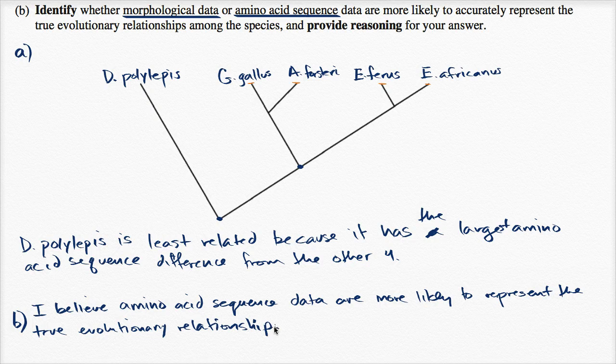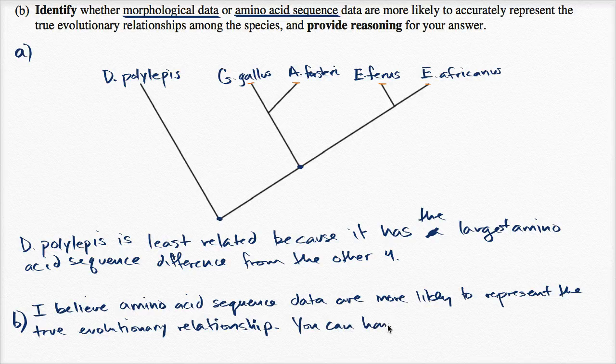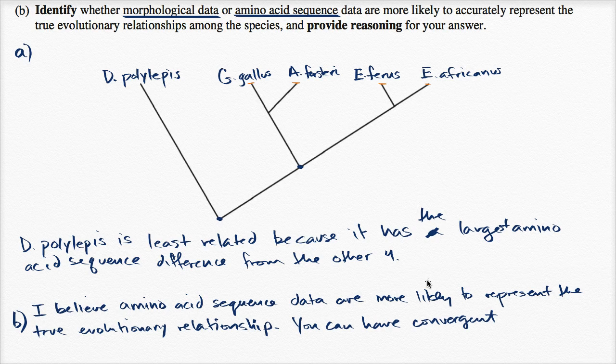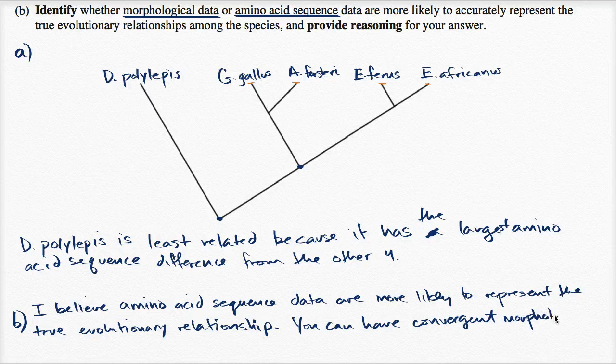And let me provide my reasoning. So, if you're looking at this thing, you could have convergent morphology. You can have convergent morphology. And all that means is, for example, you could look at a bat's wings and a bird's wings and say, okay, look, they have similar morphology, but they aren't related just because they both have wings. Or you could look at a dolphin and a fish and you say, okay, they both have flippers. Maybe they're more closely related if you just look at the body type. But that's convergent.